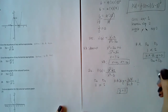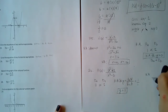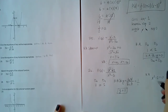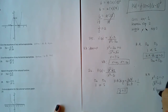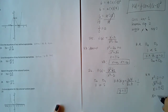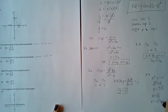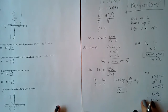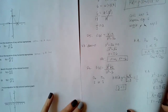I also want to find the vertical asymptote for practice. Setting the denominator x² − 2 = 0 and taking the square root gives x = ±√2. So there are two vertical asymptotes at x = √2 and x = −√2.